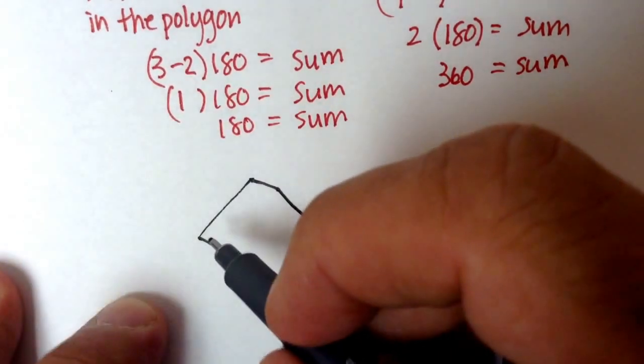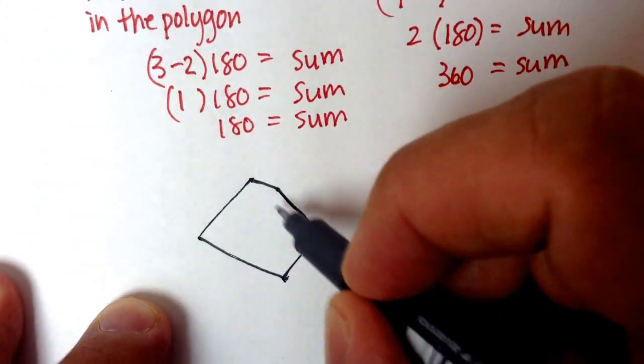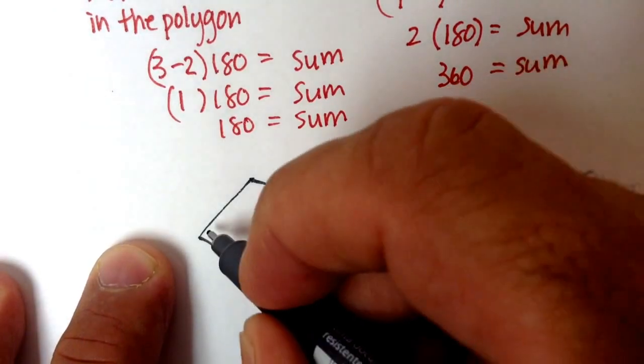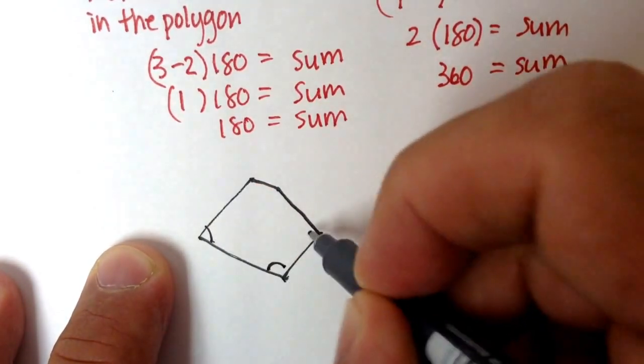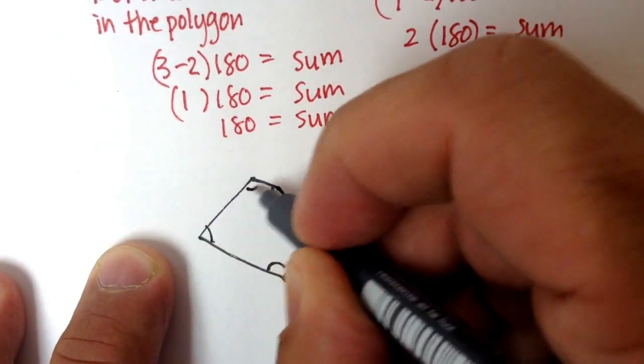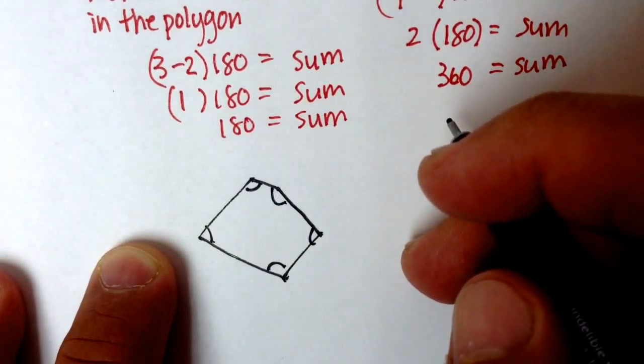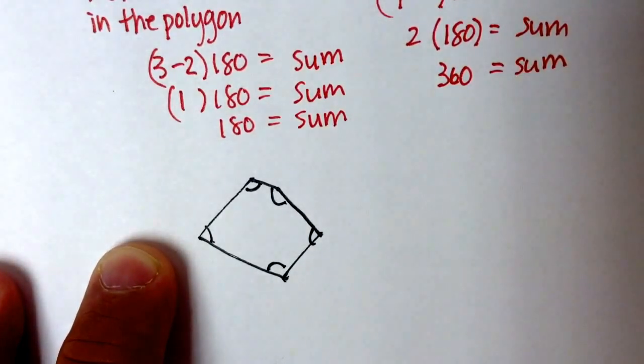Now, I could know that the sum is still going to be 540, but I won't know what each of these angles is individually, because this is not a regular polygon. Okay, I hope that was helpful.